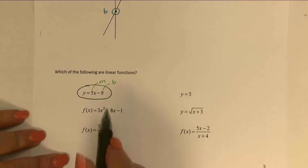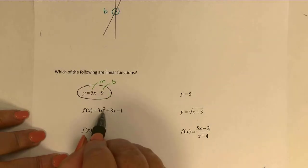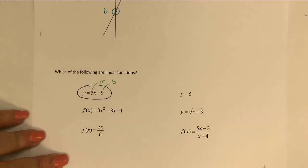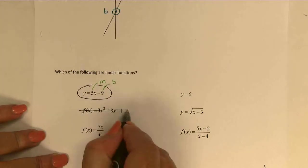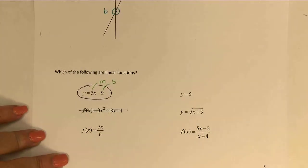The second equation we're going to have to eliminate because we do see a power of 2, and we know that in a linear equation, we can never have a power larger than 1. In the third example, we're back to a power of 1 on the x, so it seems like a pretty good candidate for a linear equation.